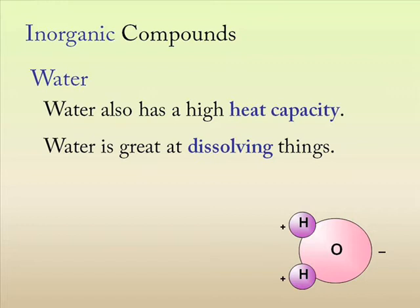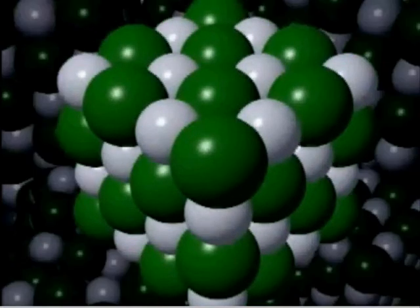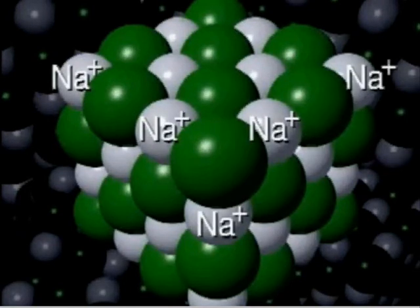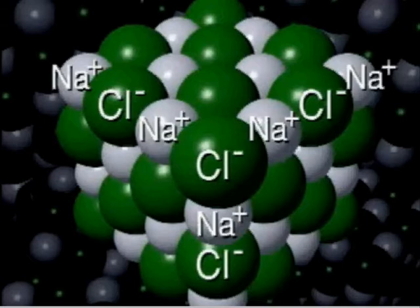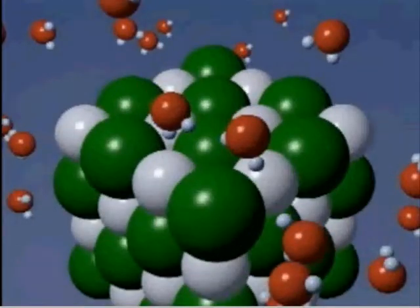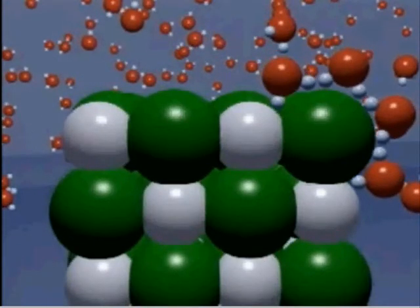Another great property of water is it's great at dissolving things. Water, being a polar molecule, is very good at dissolving molecules which are charged. For example, salt here, which contains the charged molecules of sodium and chlorine. What water is able to do is, with its hydrogen bonding, it's able to separate the sodium and the chlorine ions and literally prevent them from rejoining up with one another, hence dissolving them.